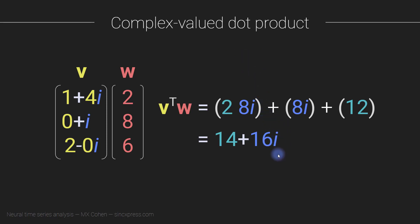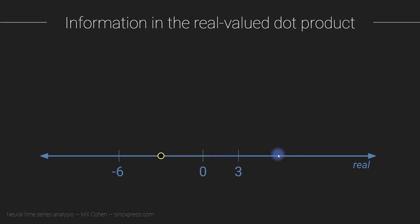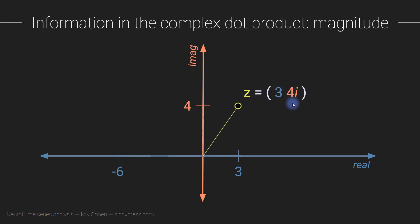Here's the cool part about complex dot products. When you have a real valued dot product it lives on the real axis and gives essentially two pieces of information: the magnitude (distance from zero) and the sign (whether it's to the left or right of zero). But with a complex valued dot product we can get a lot more information packed in, just like how complex numbers can encode more information than real valued numbers.